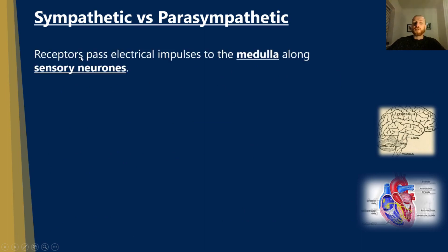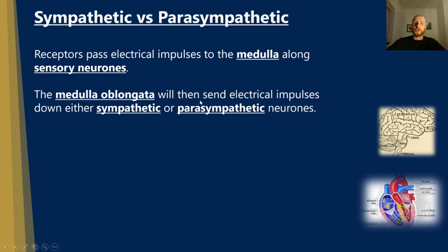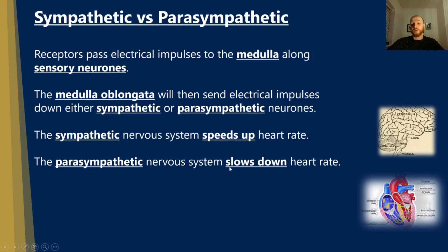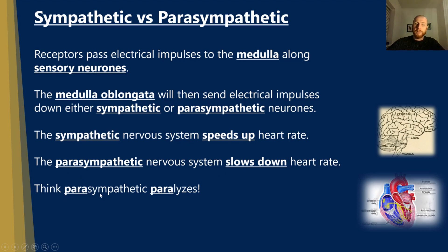Receptors pass electrical impulses to the medulla along sensory neurons. The medulla oblongata will then send electrical impulses down either sympathetic or parasympathetic neurons. The sympathetic nervous system speeds up heart rate, and the parasympathetic nervous system slows down heart rate. An easy way to remember this is to think of 'para' from parasympathetic as 'paralysing' — slowing down the heart rate. So: sympathetic speeds up, parasympathetic slows down.